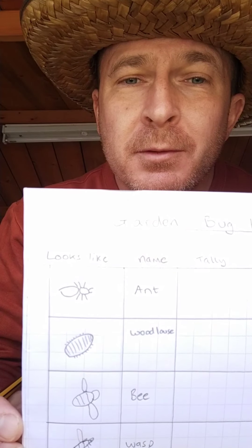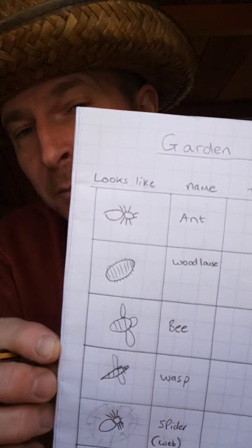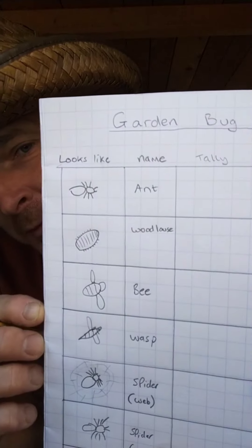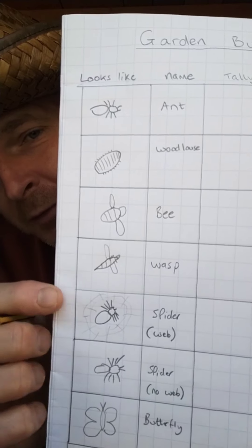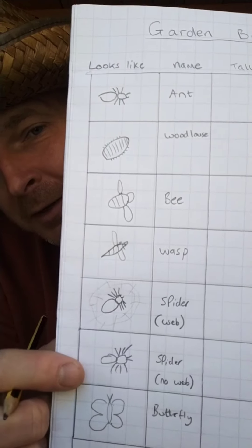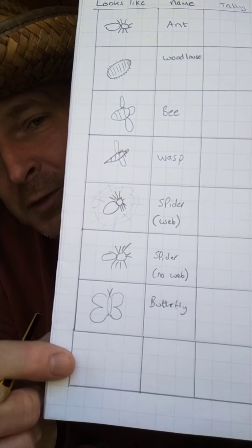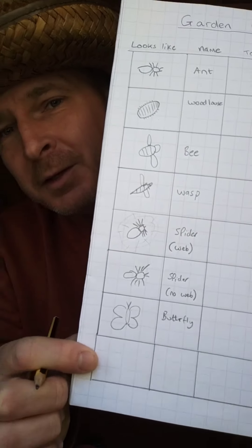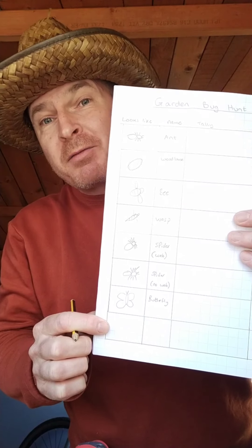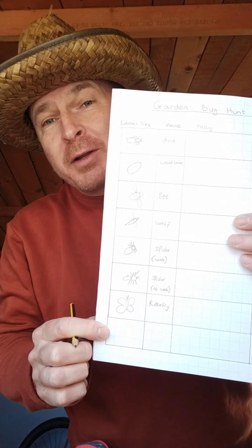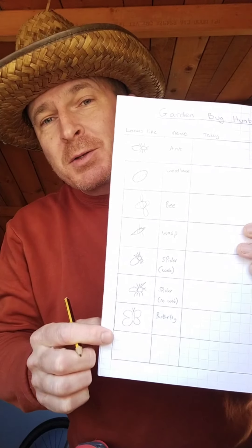I've got: ant, woodlice — I think we're going to find a lot of those — bees, wasps, spiders with webs, spiders without, butterfly, and I've left a space here for anything unusual that I find that I haven't thought of already. I quite enjoy doing the pictures; you might like to do it that way yourself.